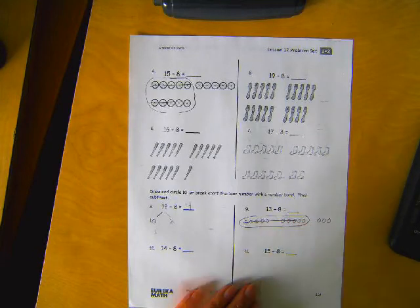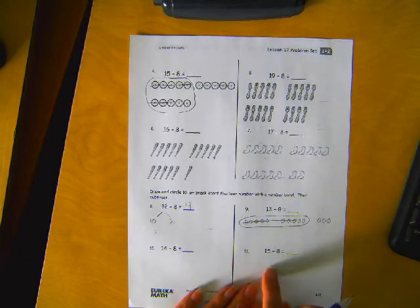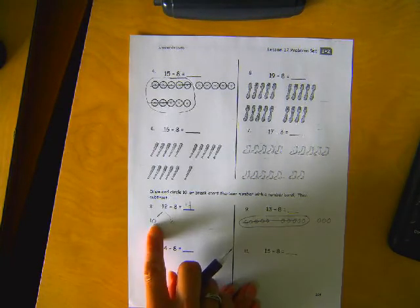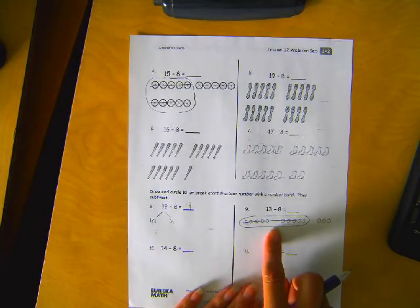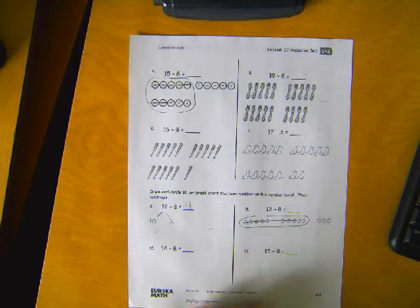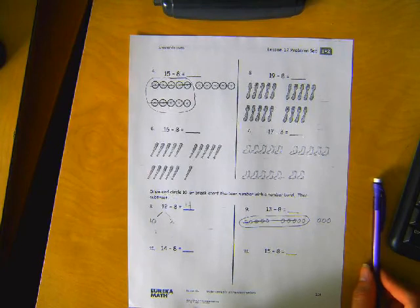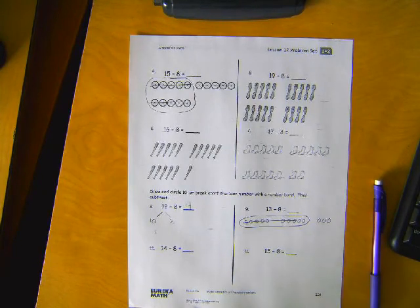Go ahead and do 10 and 11 on your own. Remember, you can either do the number bond or the picture — your choice. When you're done, it goes in the done tub. If you don't get enough time to finish, it'll go in the to-be-finished tray.